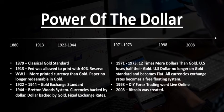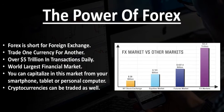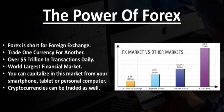Bitcoin is the leader of all cryptocurrencies, so you can see the evolution of money and the power of the dollar — as it went from being totally backed by gold to eventually becoming a fiat currency, part of a free-floating system along with other currencies. Now let's talk about the power of Forex. Forex is short for foreign exchange, where you can basically trade one currency for another. There's over $5 trillion in transactions traded daily. This is the world's largest financial market. You can capitalize in this market from a smartphone, tablet, or personal computer, and cryptocurrencies can be traded as well.